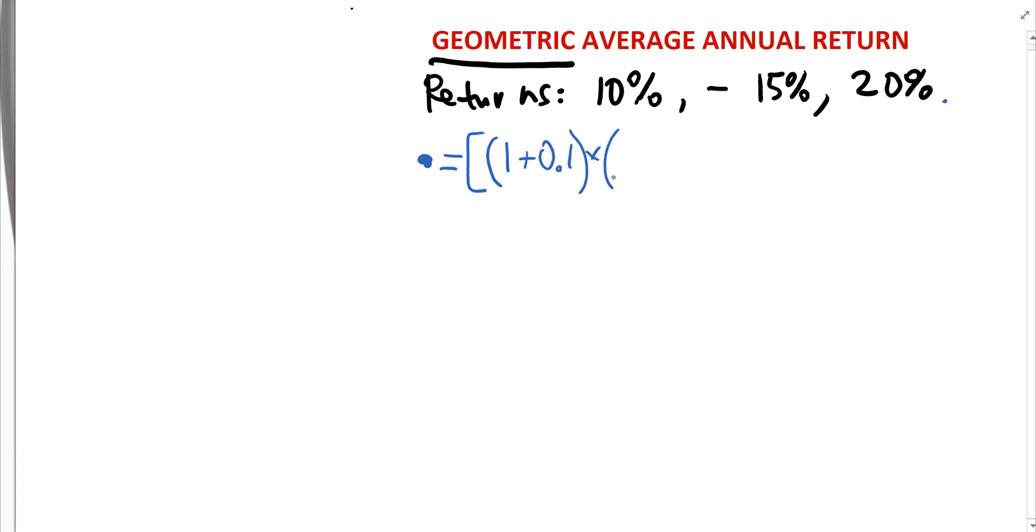Let's do it in decimals: 0.1 multiplied by one plus the second return. However, because it's negative, we use the minus sign. So minus 0.15. And then we multiply it by the third term which is one plus the third return. In decimals, that's plus 0.2.